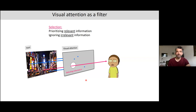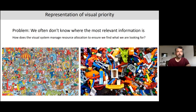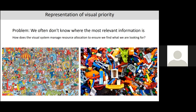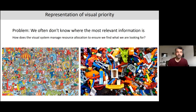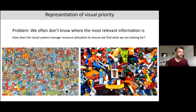The idea is that visual attention helps you select relevant information so you can prioritize it while irrelevant information is filtered out. Once you've selected the potentially relevant information, you can keep it in working memory even after the input is gone. The problem is that oftentimes we don't know where the relevant information is, so how does the visual system manage our scarce resources efficiently? This can be a very challenging task, for example when looking for Waldo or a specific Lego brick of a certain shape and color.